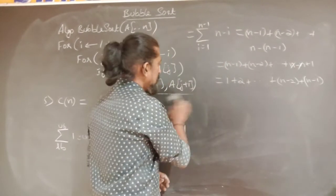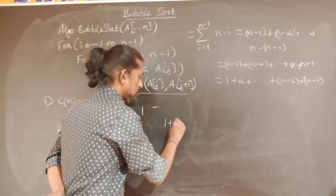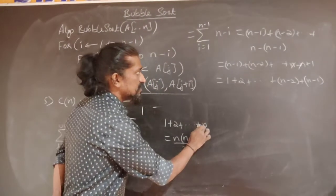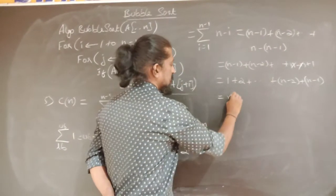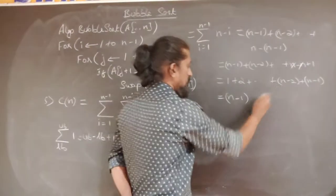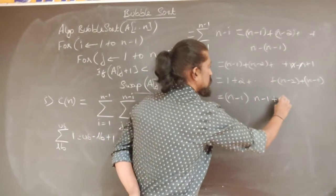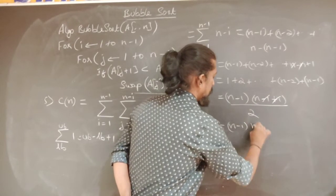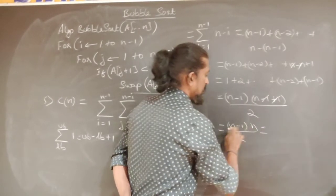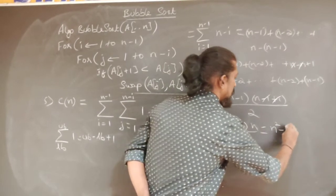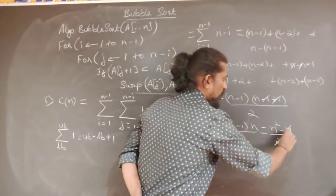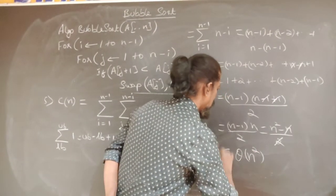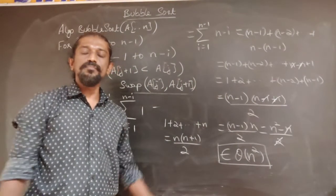We know the formula 1 + 2 + ... + n = n(n+1)/2. In our case the sum goes up to n-1, so substituting: (n-1)(n-1+1)/2 = (n-1)·n/2 = (n²-n)/2. Eliminating constants and lower-order terms, C(n) ∈ Θ(n²). Therefore, the efficiency of bubble sort in all three cases is Θ(n²) — it is a quadratic algorithm.